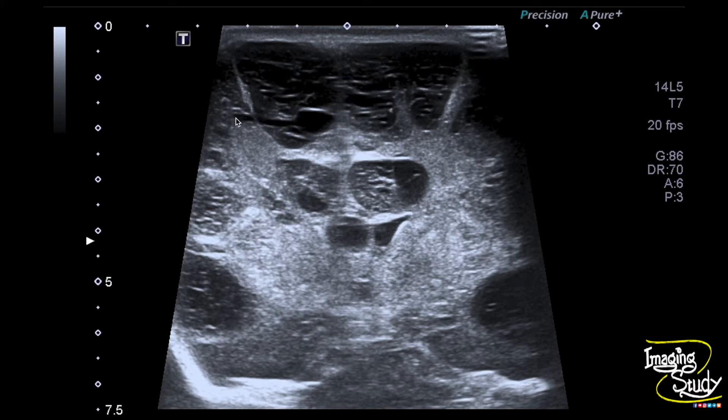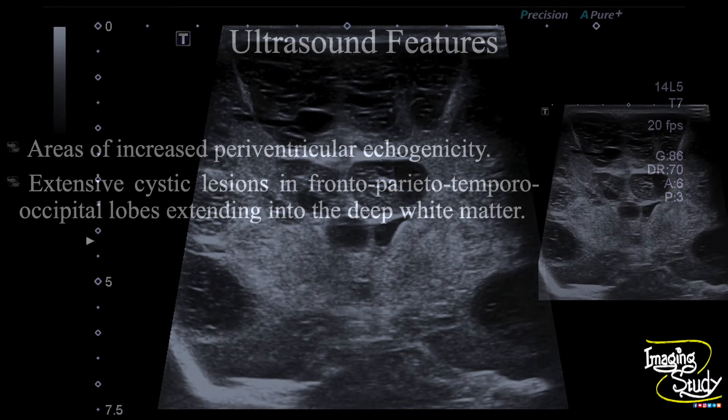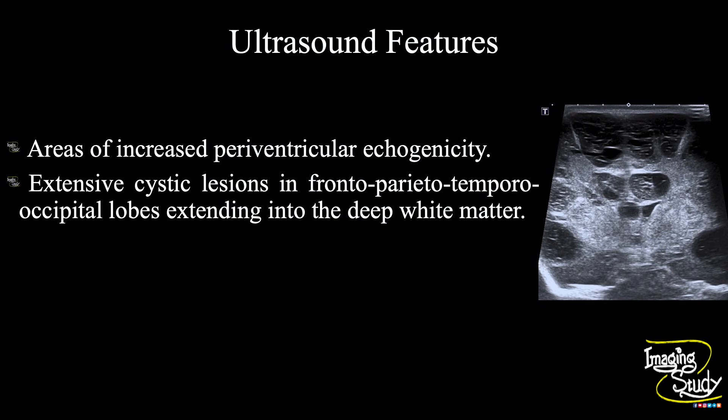This indicates grade 4 periventricular leukomalacia. In summary, areas of increased periventricular echogenicity were noted. Extensive cystic lesions in the frontoparieto-occipital and temporal lobes are seen, which extend up to the deep white matter, indicating grade 4 periventricular leukomalacia — also known as white matter injury of prematurity.